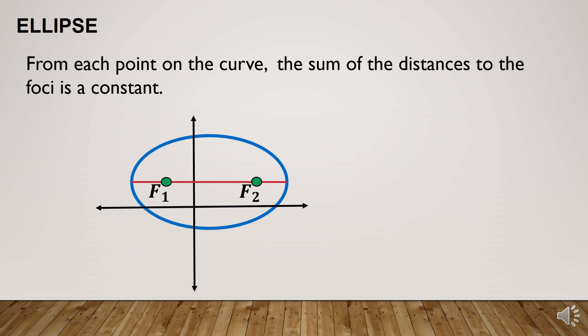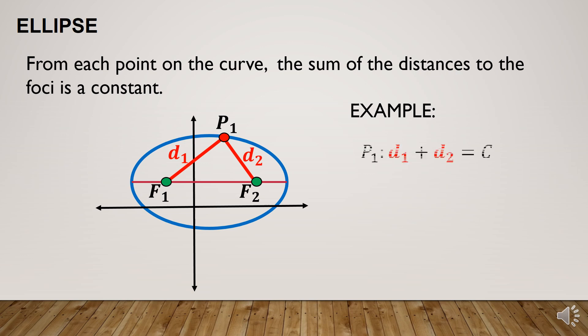Let us now consider this point. We have point 1. The distance from f1 to point 1 is d1, and the distance from point 1 to f2 is d2. According to the definition, if we add the distances of the foci to a point on a curve, d1 plus d2 is equal to a certain value c, which is a constant.